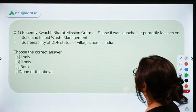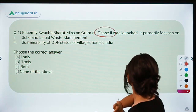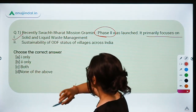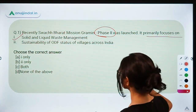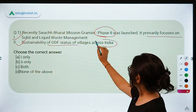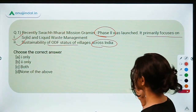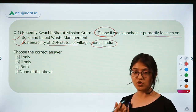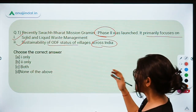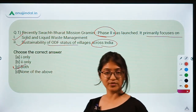The first question: Recently, Swachh Bharat Mission Grameen Phase 2 was launched. It primarily focuses on — first statement says solid and liquid waste management, and second, sustainability of ODF status of villages across India. ODF means open defecation free. In Phase 1, we achieved 100% open defecation free village status, and now the focus is on its sustainability. Both statements are correct, so the correct option is C.